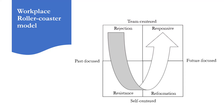You'll notice at the top of the model there is a team-centred focus, and down the bottom is a self-centred focus — two of the stages are team-centred and two are self-centred. On the left-hand side there's a past focus, and on the right-hand side a future focus. Past focus means thinking back to previous ways things were done; future focus means concentrating on what's going to happen next. Team focus means attention is on others you're working with, and self-centred means focusing on yourself.